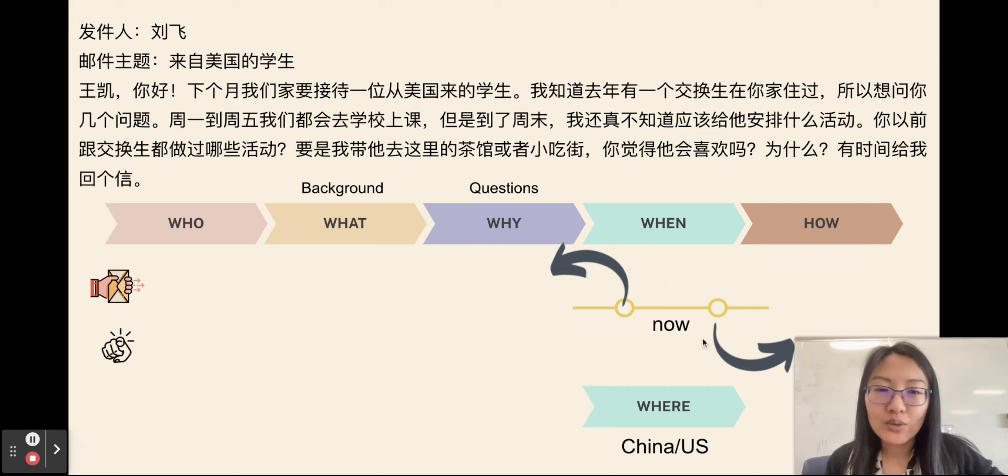So, always analyze who, what, and then highlight two questions. And then think about these two questions, 什么时候. So, this one is really tricky. So, first question is, 你以前, 你以前, so before, 你以前跟交换生做过. So, you have to answer, 我以前跟交换生做过. You don't say, 我要, right, 我以前做过. And then the second question is, 要是我带他去这里的, so this one is going to happen in future, right. 如果你带他去茶馆或小吃街, 他会喜欢吗. So, you need to analyze what time. So, the first one is talking about before. The second one is talking about future.